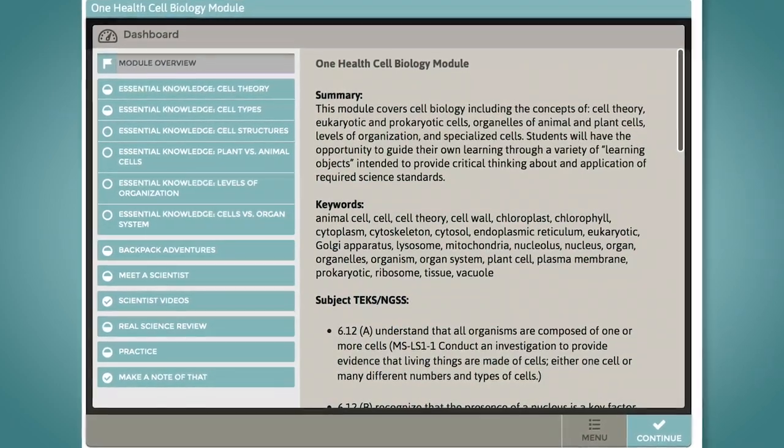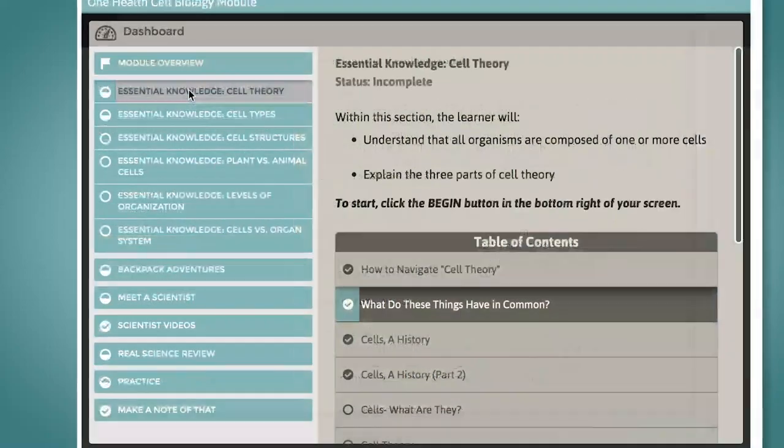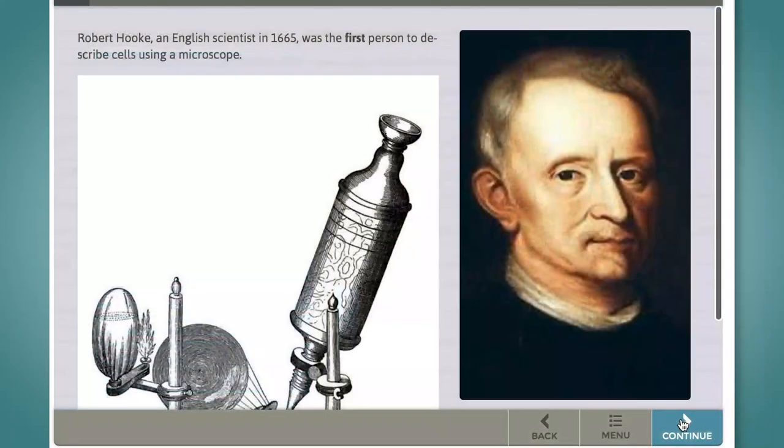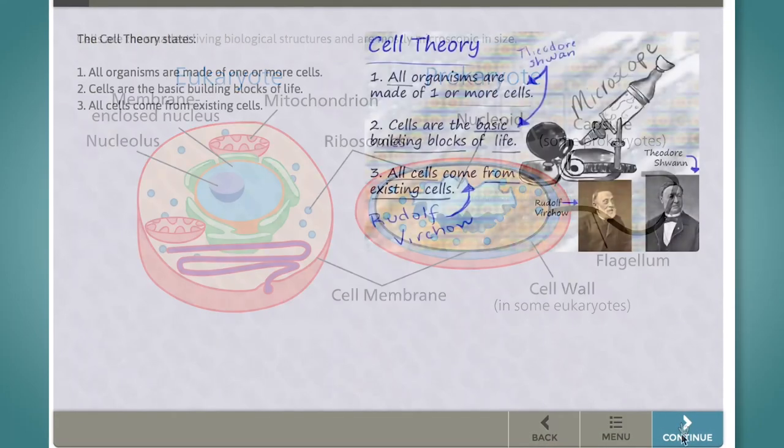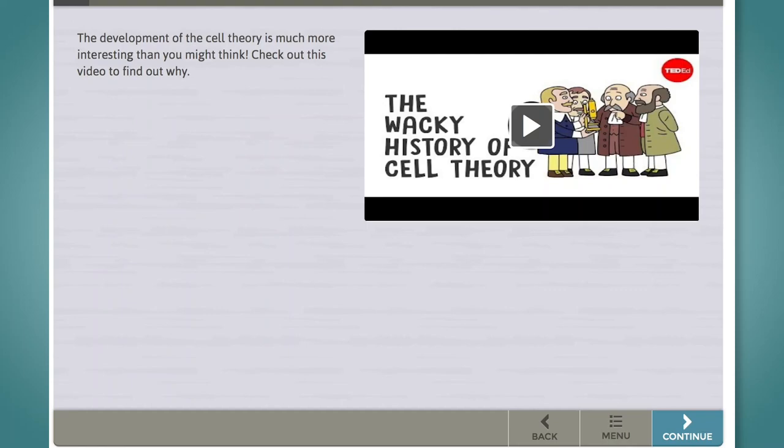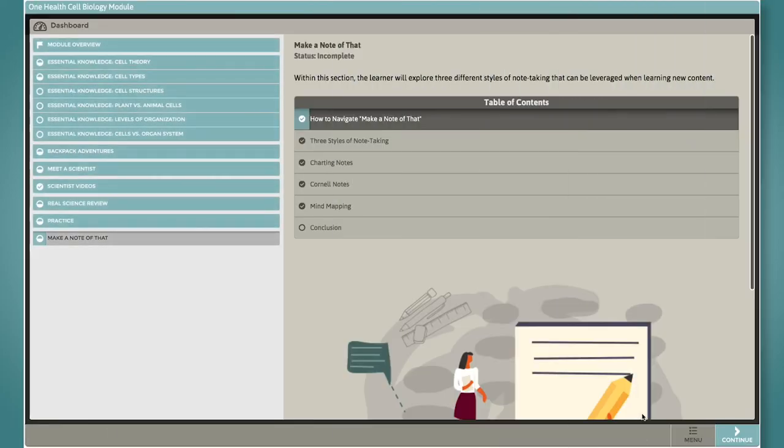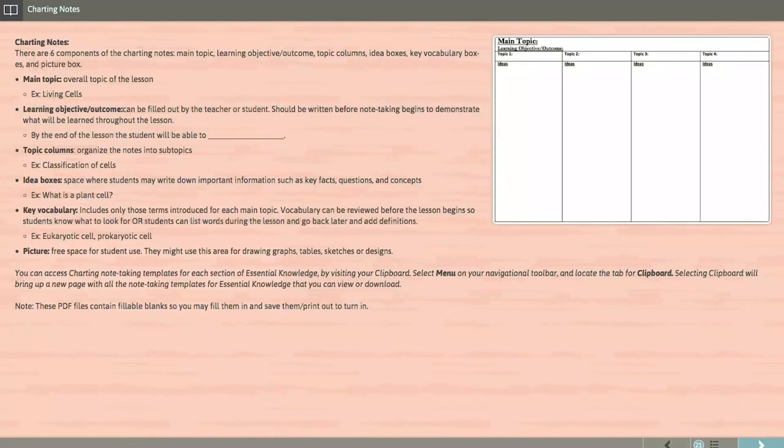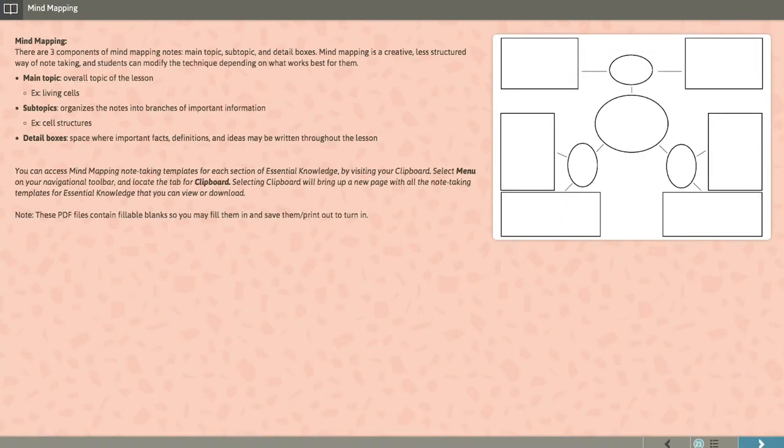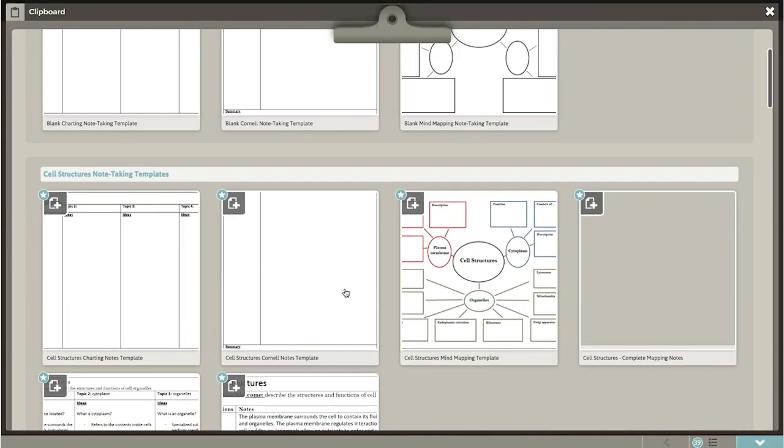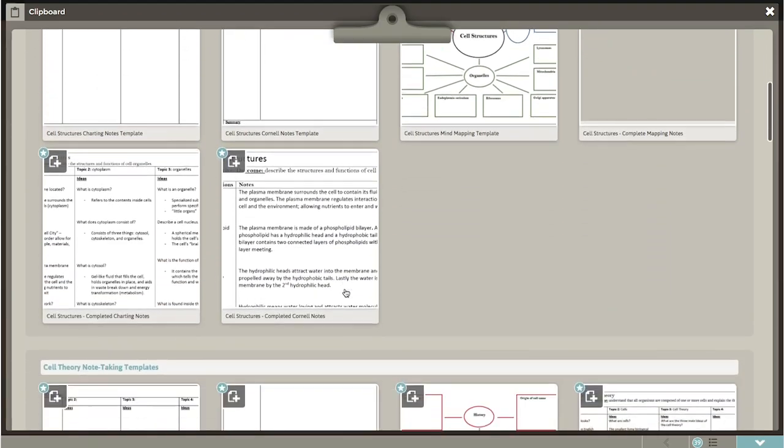Each One Health learning module features the following sections. First, essential knowledge provides standards-based content within an interactive slideshow-style presentation. Throughout this learning object, students will have opportunities to check for understanding and review what they have learned. Make a Note of That provides three different note-taking templates to accommodate various learning styles. These templates include guiding questions and vocabulary words to consider while exploring the essential knowledge section.